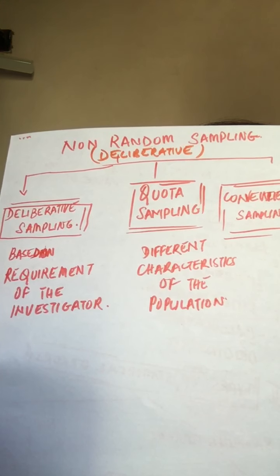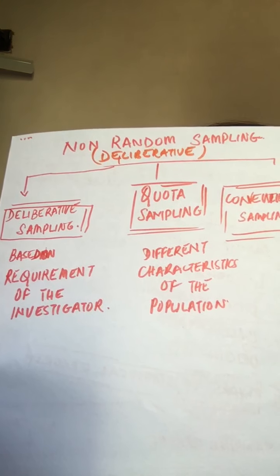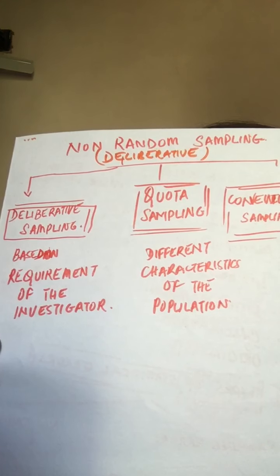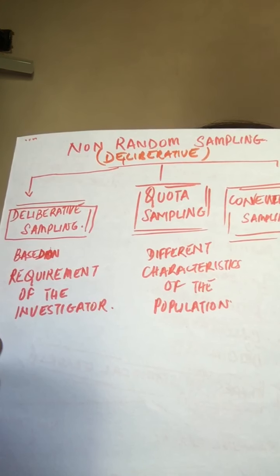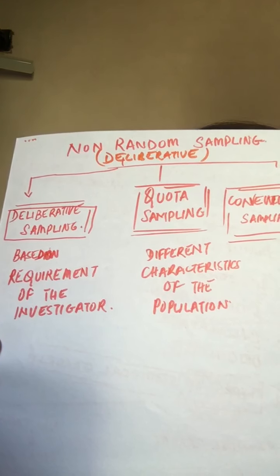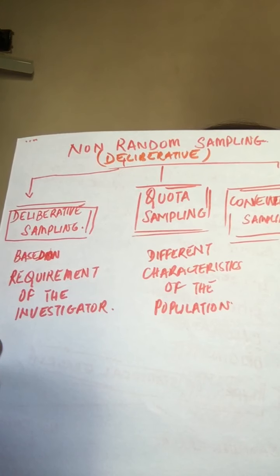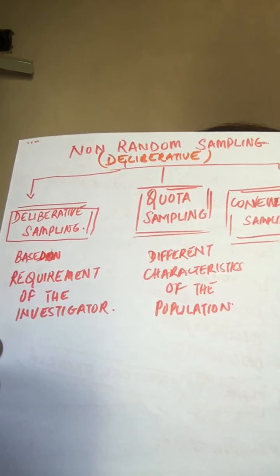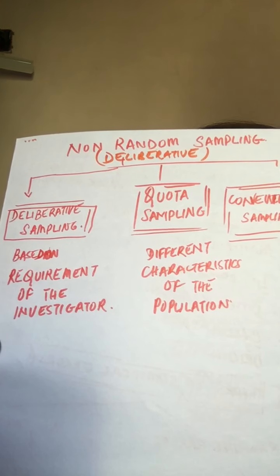Some quota of items to be selected is fixed for each group. The investigator selects the fixed number of items from each group to frame a sample, but selection within quota items will be made by the investigator according to his choice.